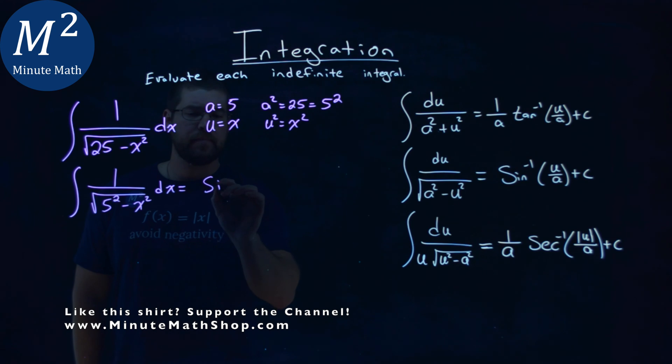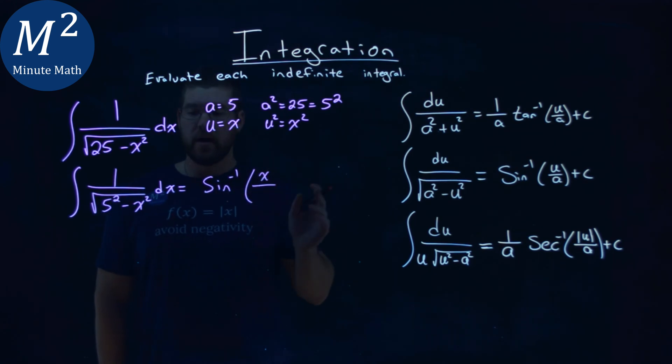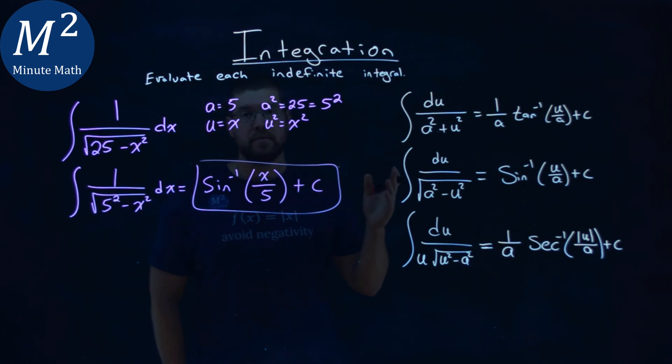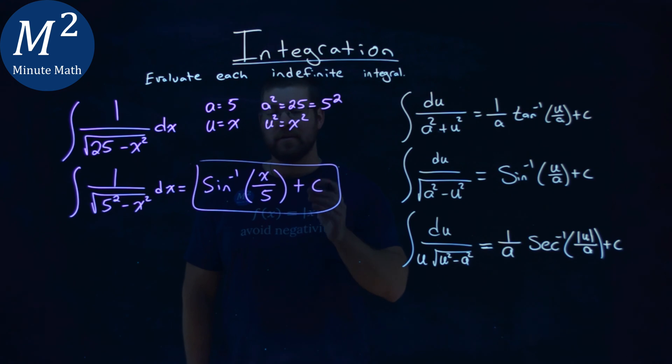Arc sign of our u value we found to be x here, and our a value was 5, and then plus c. Now this is a pretty simple problem once you know our definitions. So our final answer here is the arc sign of x over 5 plus c.